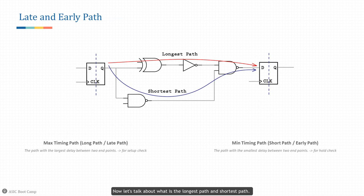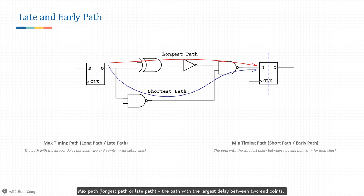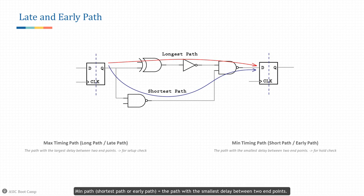Now let's talk about the longest path and shortest path. In general there are multiple timing paths through which the logic can propagate to the required destination point. The actual path taken depends upon the state of the other inputs along the logic path. Max path — namely the longest path or so-called late path — means the path with the largest delay between two endpoints; this type of path is usually used for setup check. Min path — also referred to as the shortest path or early path — means the path with the smallest delay between two endpoints, and is usually used for hold check.